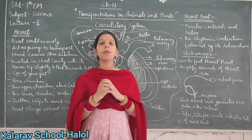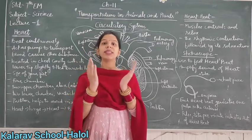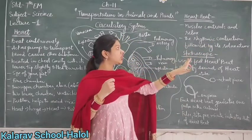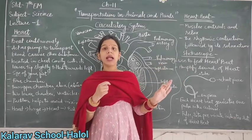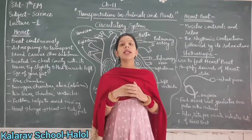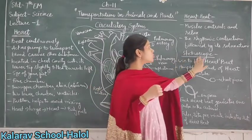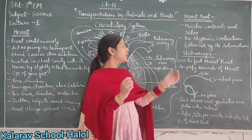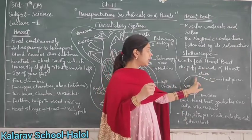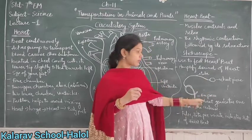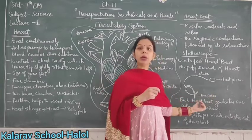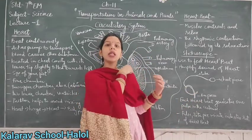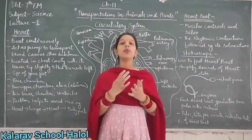The rhythmic contraction followed by relaxation of the heart muscles is called a heartbeat. The heart vessels are made up of muscles which constantly contract and relax. Heartbeat is listened to using an instrument called a stethoscope, which amplifies the sound of the heart. It contains a chest piece, a tube, and two earpieces. Each heartbeat generates one pulse in the arteries, so the pulse rate per minute indicates the rate of heartbeat.